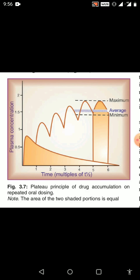Sometimes a question comes on steady state plasma concentration, so in that question you can draw this graph as well. After four to five half-lives there is fluctuation with maximum and minimum levels of plasma concentration, and we measure the average of these two extreme values of the plasma concentration.